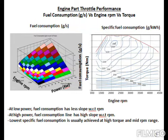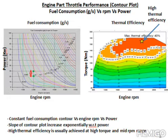Fuel consumption map is an important data used for theoretical calculation of fuel economy. Low specific fuel consumption is usually achieved at rated torque and at mid rated RPM range. High thermal efficiency is achieved in the rated torque and RPM range.